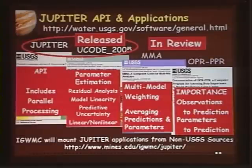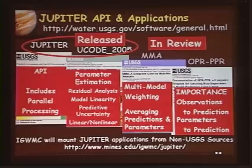The USGS can only mount those applications that have USGS authors. So if you have a JUPITER application that does not have a USGS author and you would like to get it out to the world, let me know, because at IGWMC we mount all the JUPITER applications — USGS and otherwise — and would make a link to your site so your code could be used by the general public.